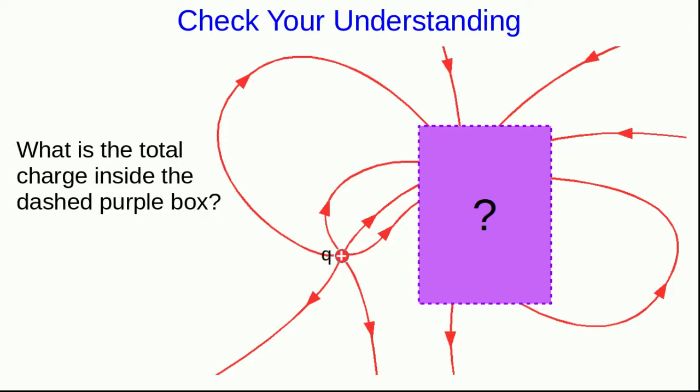The first thing to notice is that this positive charge with charge q on it has six lines coming out. And so that's the convention for the diagram, that a charge of plus six corresponds to six lines.